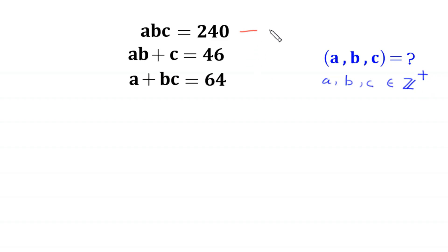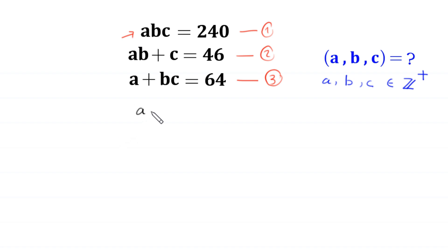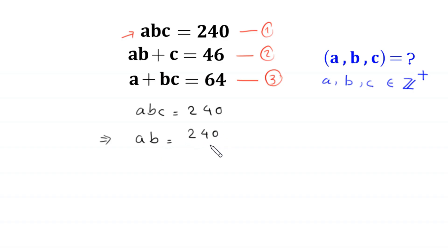Let us call this equation 1, this equation 2, and this equation 3. We start from equation 1: ABC is equal to 240. If we divide both sides by C, this implies that A times B is equal to 240 divided by C. Now, we put this value of AB — that is 240 over C — into equation 2.